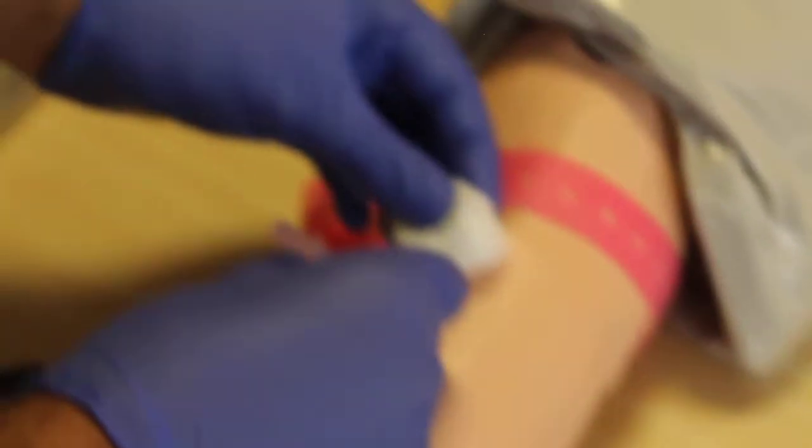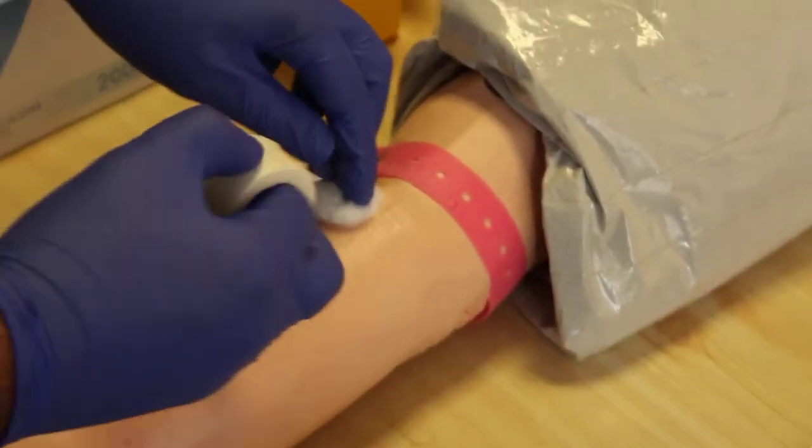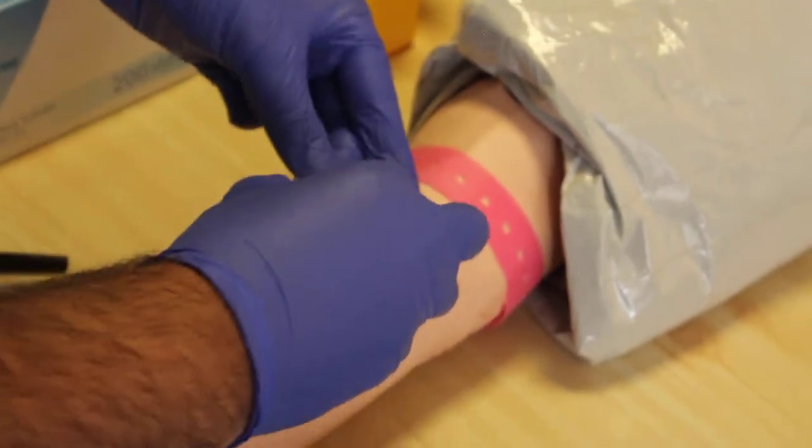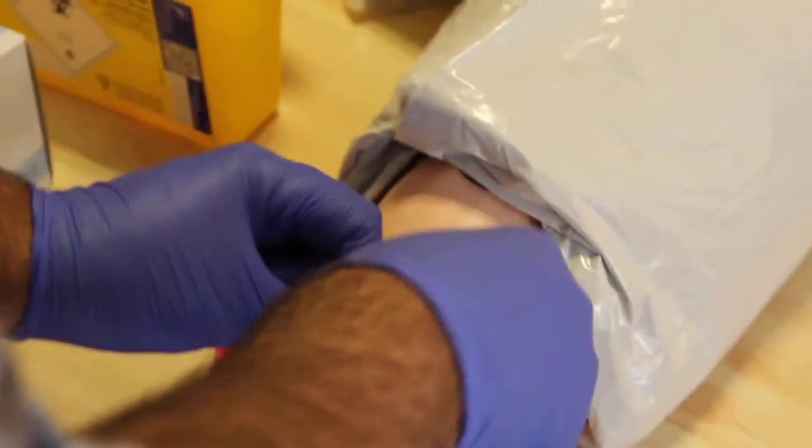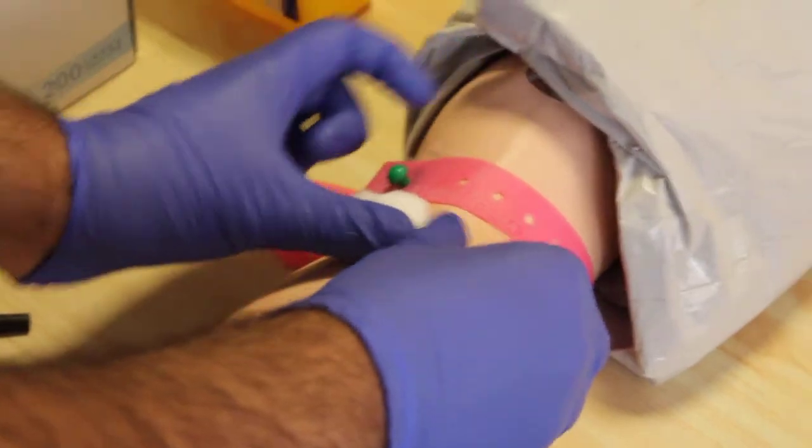Open the tourniquet. Take the cotton, put it on top, take the needle out, and put it straight into the sharps bin first thing. After that, you can take a piece of tape to hold this temporarily on the patient.